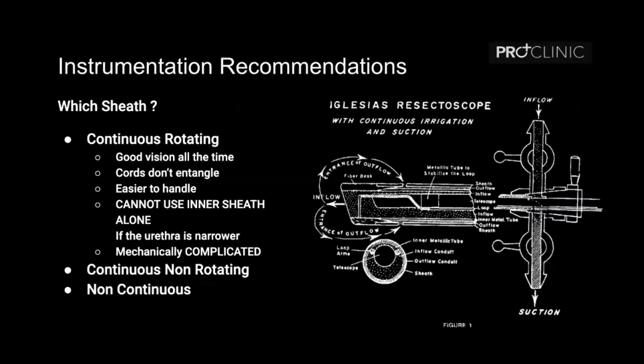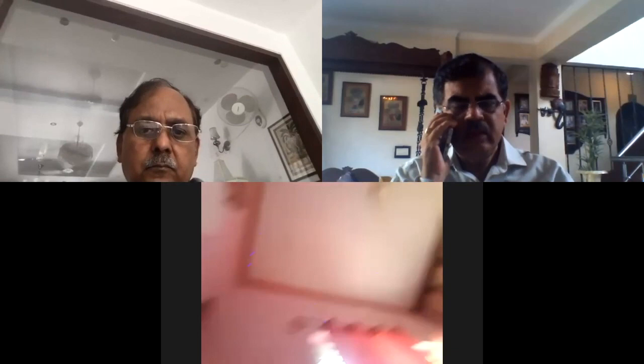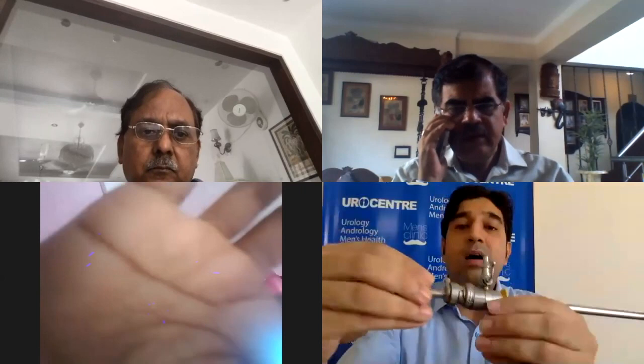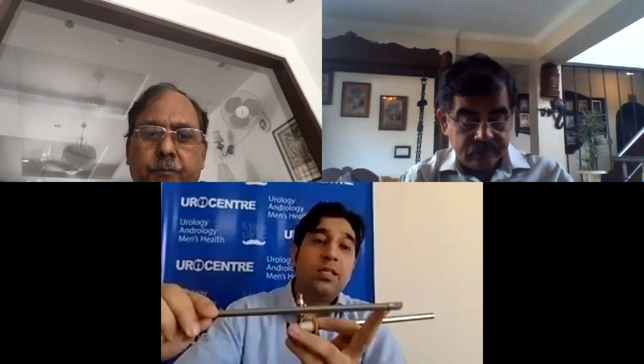Coming to instrument recommendations — which sheet should a resident use? We are now using the continuous rotating type of sheet. I will stop sharing the screen and give a physical demonstration. So here is the assembled resectoscope sheet — this is the continuous rotating type. Here we can see the complicated tip of the inner sheet and the outer sheet. Just by looking at the outer sheet we can say this is a continuous rotating type of resectoscope.